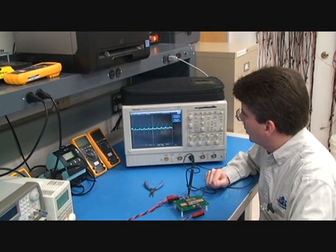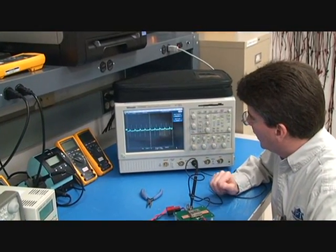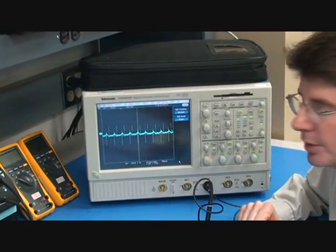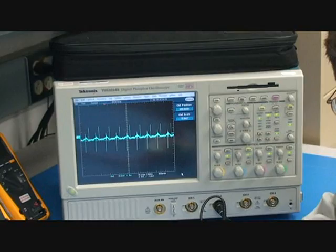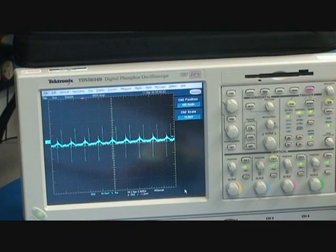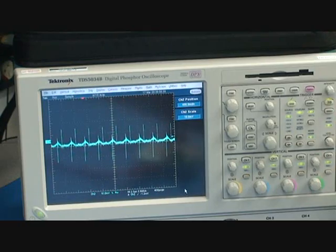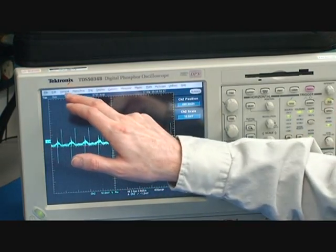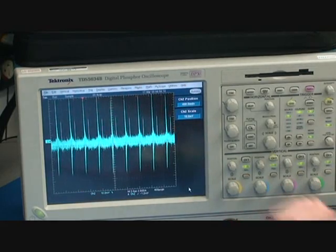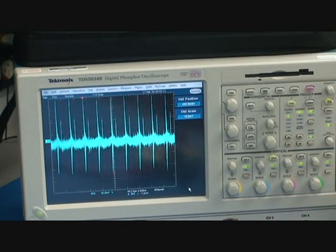Now here on the oscilloscope we can see the output ripple. And we can see about 30 millivolts peak to peak. This is measured with a 20 megahertz bandwidth on the oscilloscope. The specification for this part is 40 millivolts peak to peak. Now if I turn the bandwidth limit off on the oscilloscope, I can see there's quite a bit more ripple especially high frequency.